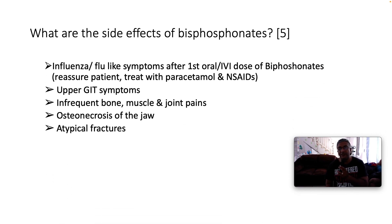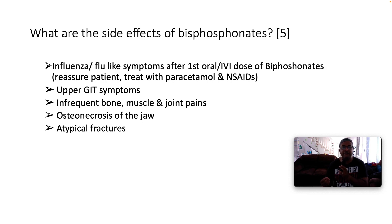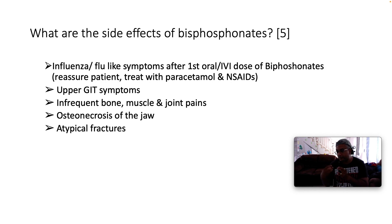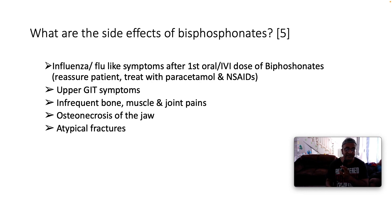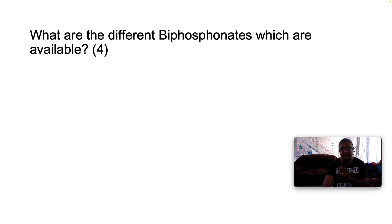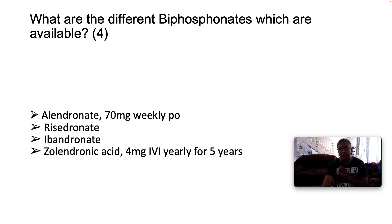Side effects of bisphosphonates include influenza-like symptoms after the first oral or IV dose — reassure the patient and treat with paracetamol and NSAIDs. They can cause upper GI symptoms and infrequent bone, muscle, and joint pains. The most notable side effect that commonly appears in exams is avascular osteonecrosis of the jaw — a picture of jaw necrosis with a history of bisphosphonate use is a classic exam question. Atypical fractures are also a recognized side effect.